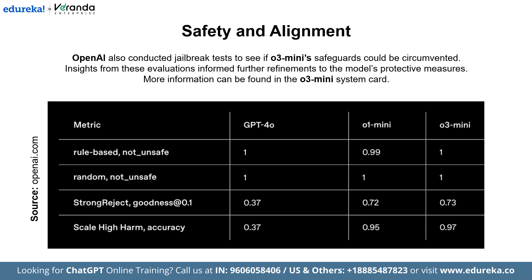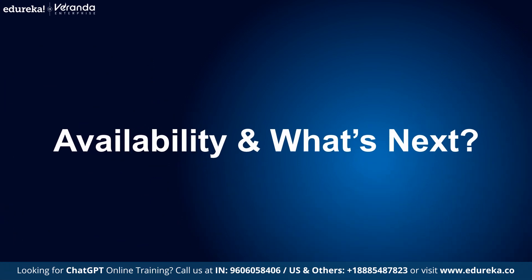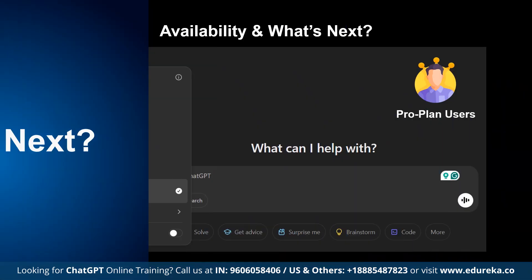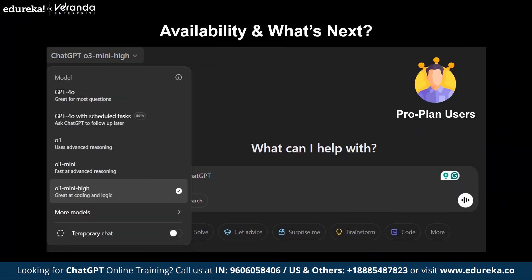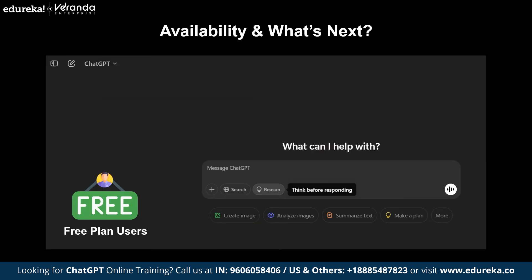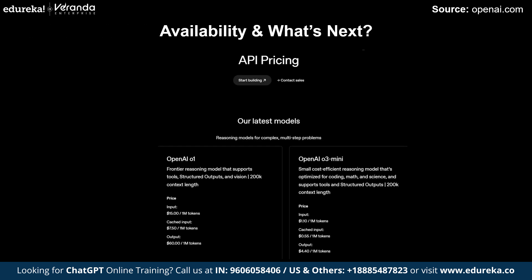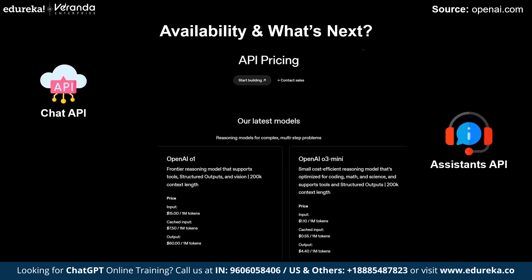Now let's see availability and what's next. OpenAI O3 mini is available right now across multiple platforms. For ChatGPT users, Plus, Team, and Pro users already have access, and Free Plan users can now try O3 mini by selecting 'Reason' in the Message Composer. The model is also rolling out in the Chat Completions API, Assistants API, and Batch API for select developers in API usage tiers 3 to 5.